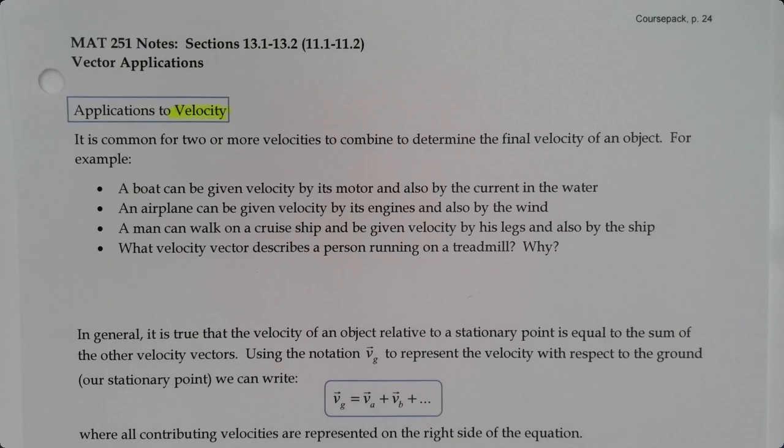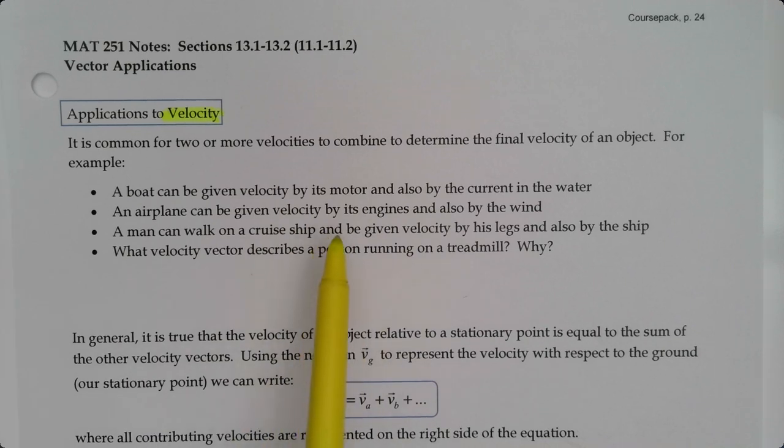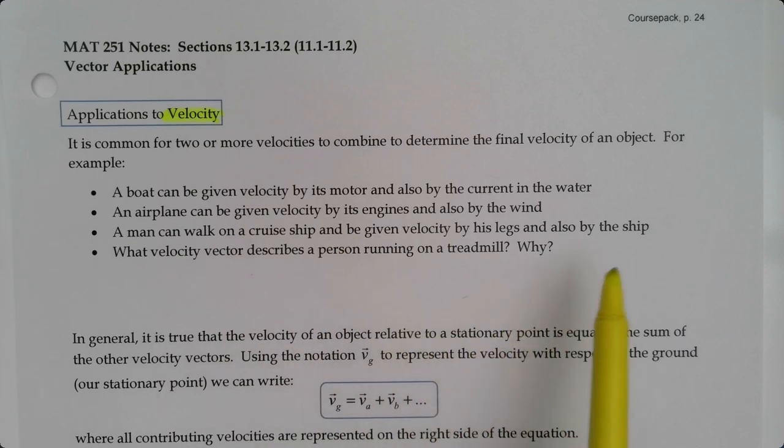For example, a boat can have a velocity from its motor but then also there's current in the water. Similarly, an airplane has the velocity given to it by its engines but it also has crosswinds, headwinds, and tailwinds. A man can walk on a cruise ship; he's got velocity from his legs but the ship itself has velocity.